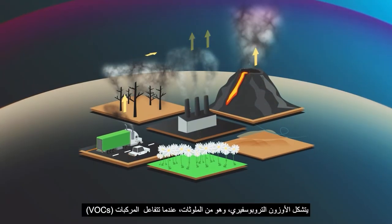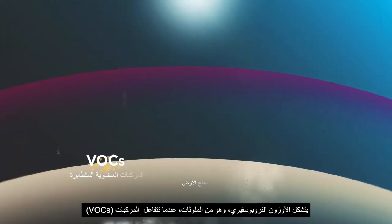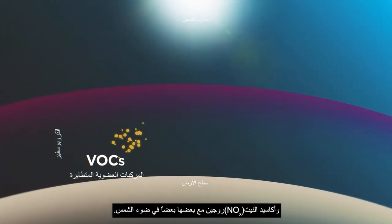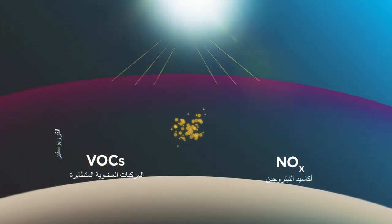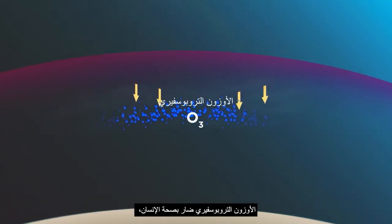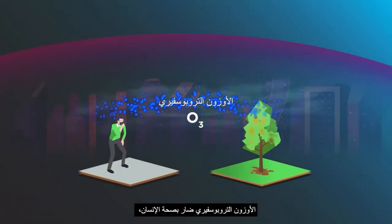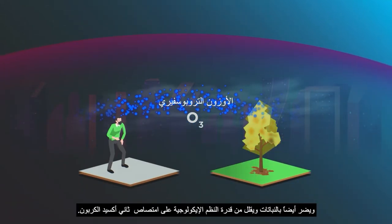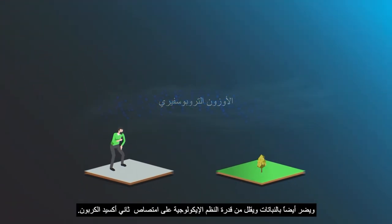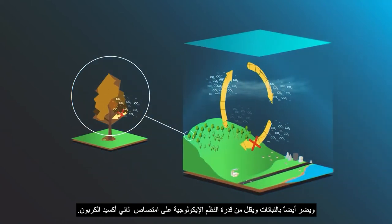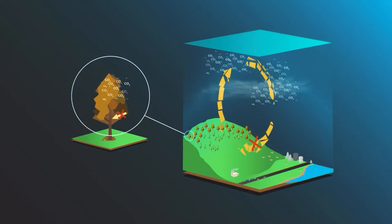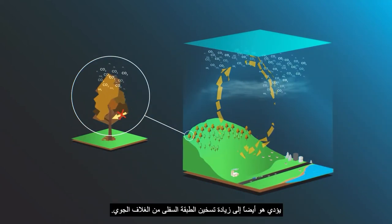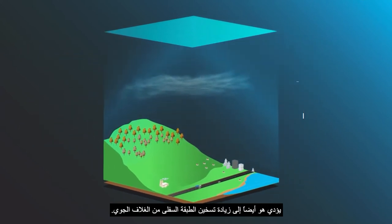Tropospheric ozone, a pollutant, forms when volatile organic compounds and nitrogen oxides react with each other in sunlight. Tropospheric ozone is harmful to human health, damages plants and reduces the capacity of ecosystems to absorb carbon dioxide. It also leads to additional heating of the lower atmosphere.